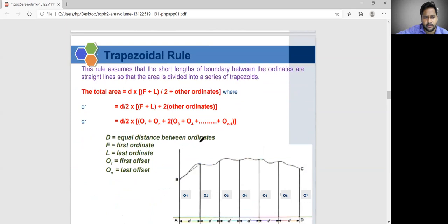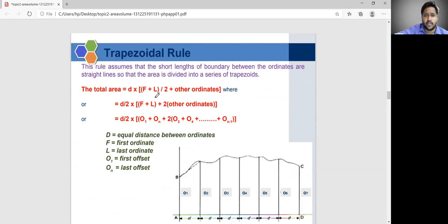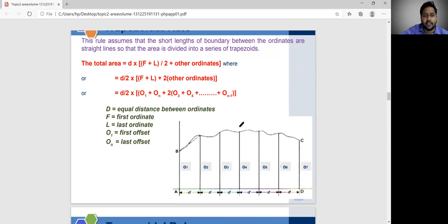Trapezoidal rule. In this particular lecture, trapezoidal rule. This rule assumes that the short length of boundary between the ordinates are straight lines, so that the area is divided into series of trapezoids. So, whatever the area, if you have an irregular area, that irregular area will be divided into number of trapezoidals. That number of trapezoidals will be, area will be calculated, and then will get the total area.